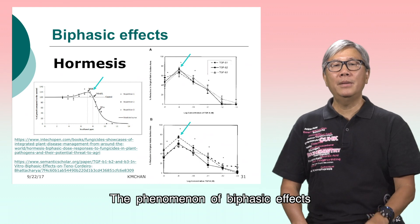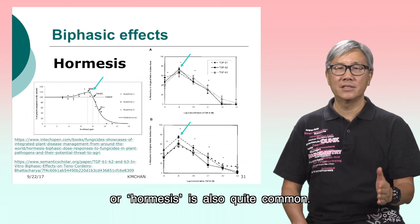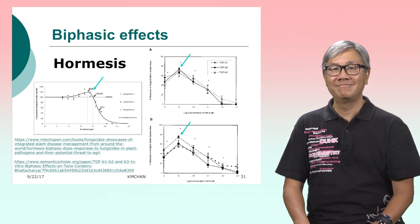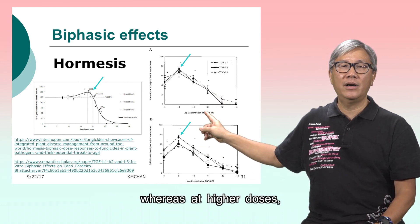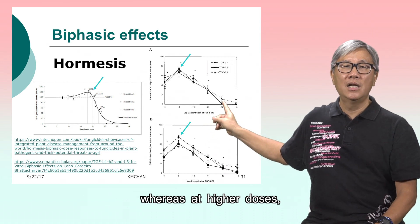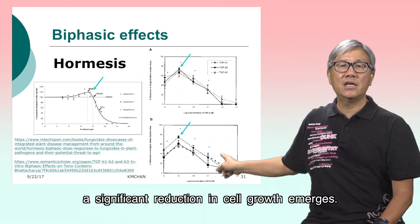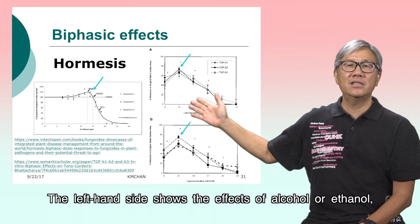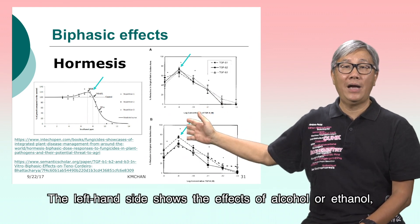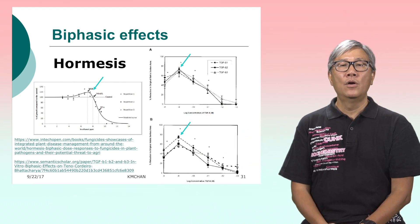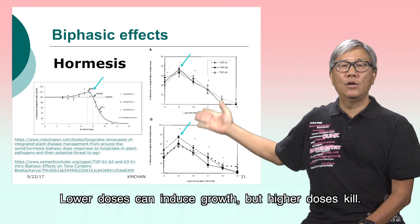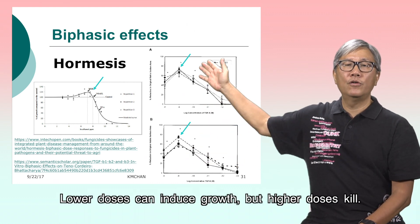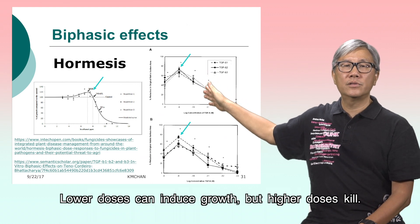The phenomenon of biphasic effects, or hormesis, is also quite common. At lower doses, cell growth is stimulated, whereas at higher doses, a significant reduction in cell growth emerges. The left-hand side shows the effects of alcohol or ethanol, whereas the levels of growth factors such as TGF-beta are shown on the right-hand side. Lower doses can induce growth, but higher doses kill.